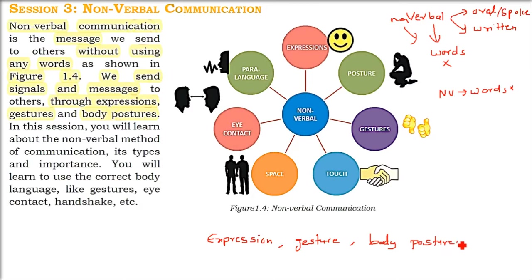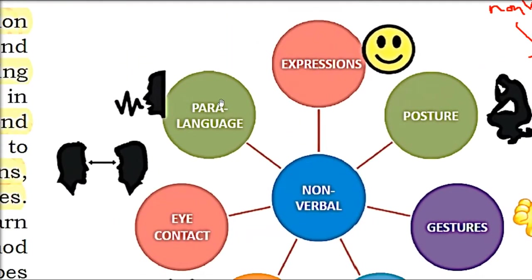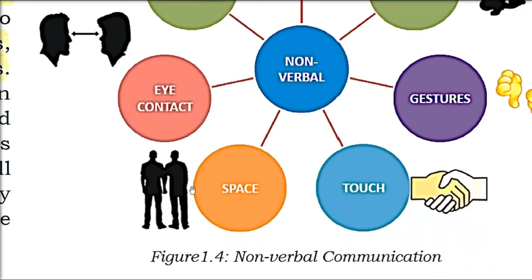Body posture can show what state you are in. In nonverbal communication, para language is generally used. Eye contact is very important, as is space — the space between two people. If you are with friends, you can get closer, but not in a formal meeting with your boss or a female co-worker.